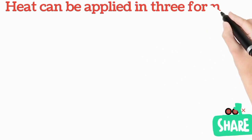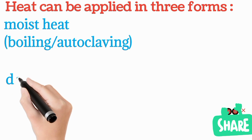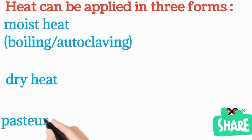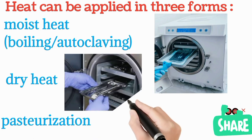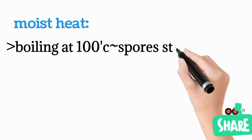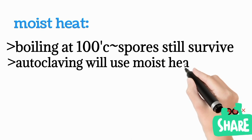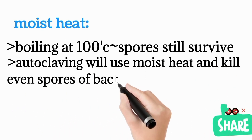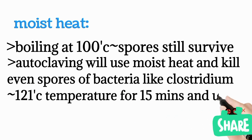Heat can be applied in three forms: moist heat (boiling and autoclaving), dry heat, and pasteurization. Boiling uses a temperature of 100 degrees Celsius, but bacterial spores still survive. Autoclaving uses moist heat at 121 degrees Celsius, 15 PSI, for 15 minutes, and kills even the spores that survive boiling.